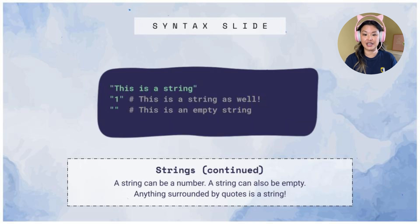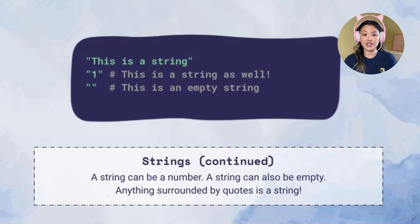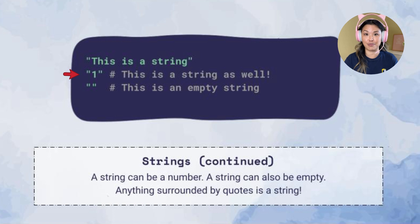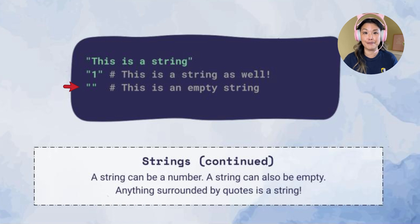Here are some examples of some other strings. The first one says 'this is a string' — it's inside of quotations, it's some text. Right below that is the number one inside of quotes, and because it's inside of quotes, this is also going to be a string. Now right below that, we've got a tricky one — it's just two quotations. This is also a string because it's inside quotes, but this is what we call an empty string. There's no information inside of it.